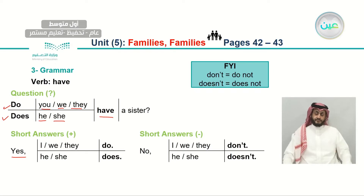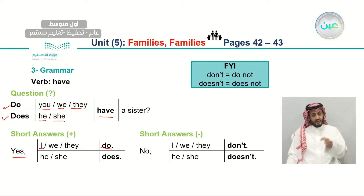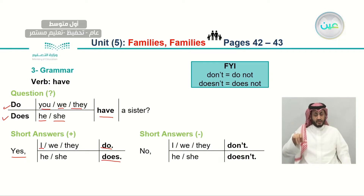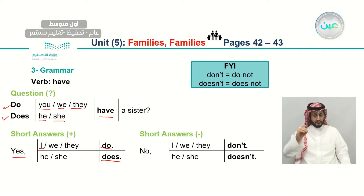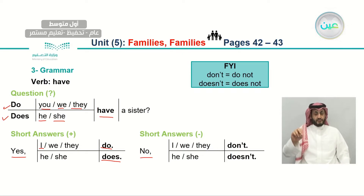Let's look at the short answers. For positive short answers: yes, I do; yes, we do; yes, they do; or yes, she does. For negative short answers, you start with 'no' followed by the subject pronoun: I or we or they come with 'don't.' No, he doesn't. No, she doesn't.